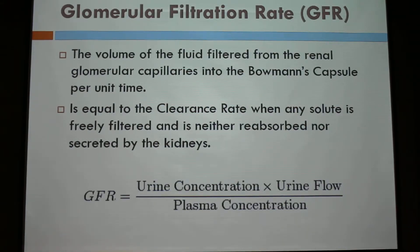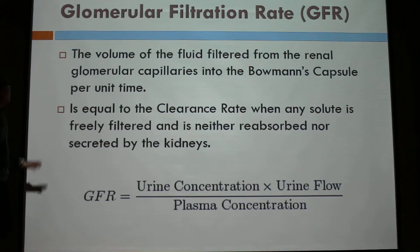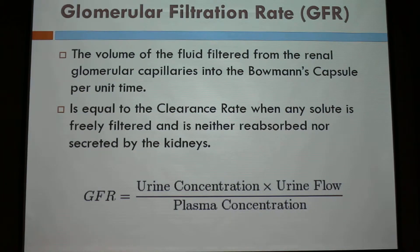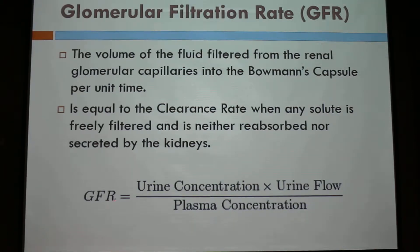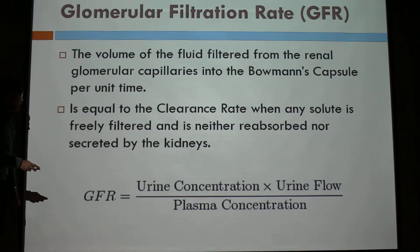I'm going to give some introduction about how we define GFR. The GFR is the volume of fluid filtered from the renal glomerular capillaries into the Bowman's capsule per unit of time. It is equal to the clearance rate when inulin is freely filtered and is neither reabsorbed nor secreted by the kidneys. We can calculate the GFR by multiplying the urine concentration and the urine flow and dividing by the plasma concentration.